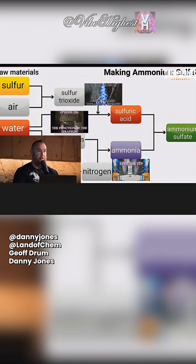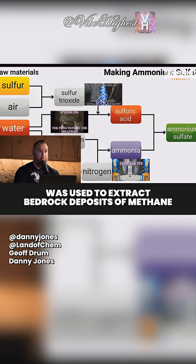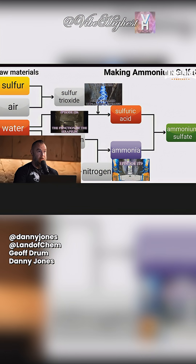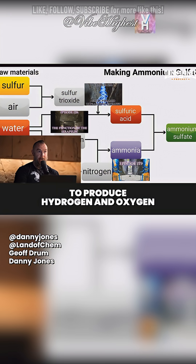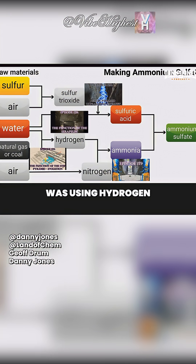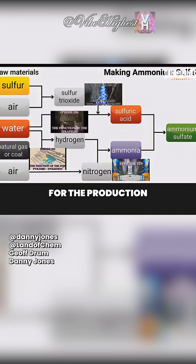For example, the Step Pyramid was used to extract bedrock deposits of methane. The Serapeum used water and ultrasound to produce hydrogen and oxygen. The Red Pyramid was using hydrogen and nitrogen for the production of ammonia.